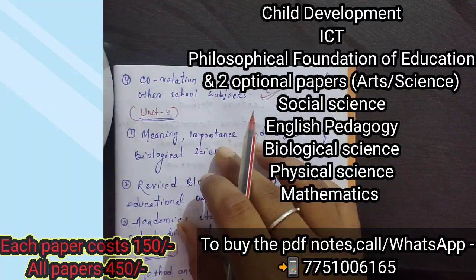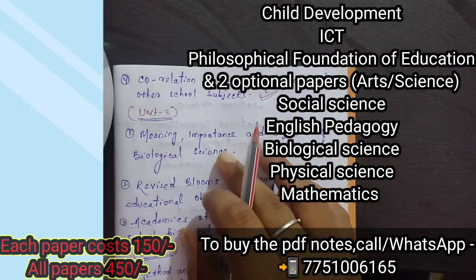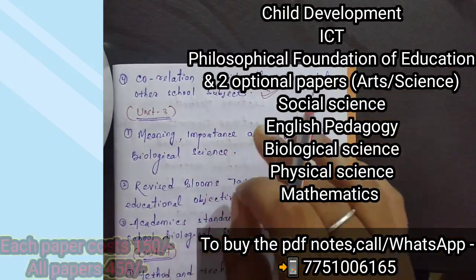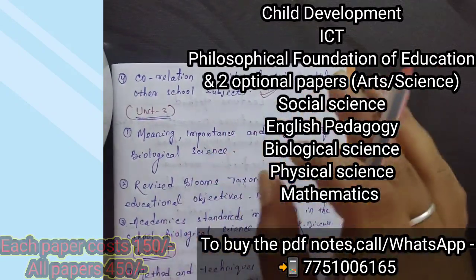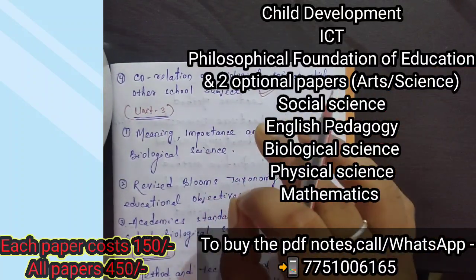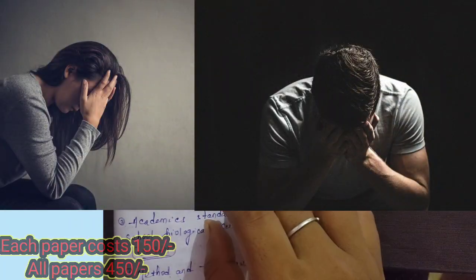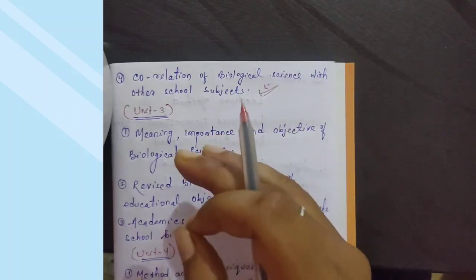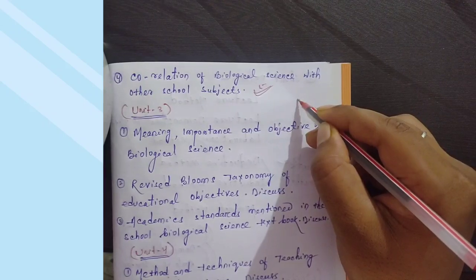For those who have already completed their preparation and those who remain, you can contact on this number. One full paper, all major subjects, costs 450 rupees total. It's normally 450, negotiable. For those who need all papers and want to complete preparation, contact me. The PDF is also available for 740, but for those who have already prepared massively, they could have done the production themselves.